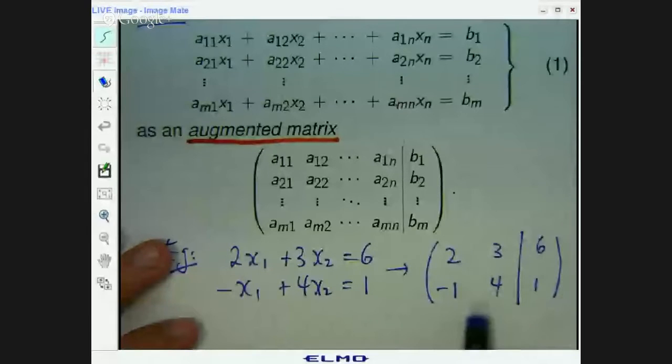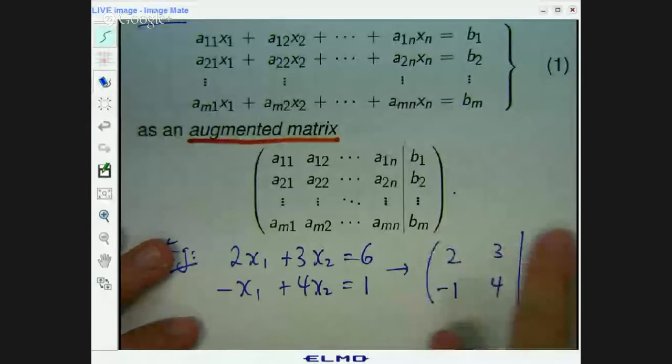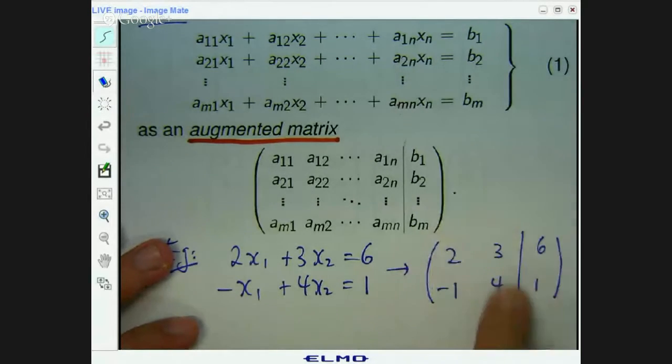Okay, so this is an example of a matrix, an augmented matrix. You can see it's sort of like a rectangular block of numbers. It's got two rows, which are horizontal. And it's got three columns that are vertical. So first row, second row, first column, second column, third column.